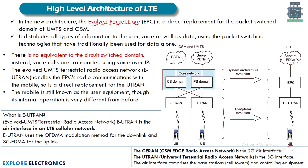EUTRAN stands for Evolved UMTS Terrestrial Radio Access Network. It is the air interface in the LTE cellular network. GERAN (GSM EDGE Radio Access Network) is the 2G air interface; UTRAN is the 3G interface; and in 4G, EUTRAN uses OFDMA (Orthogonal Frequency Division Multiple Access) for the downlink and SCFDMA for the uplink. This is the evolution from GSM (2G) to UMTS (3G) to LTE (4G).